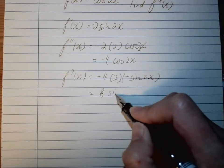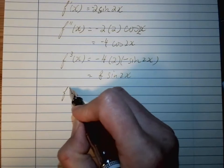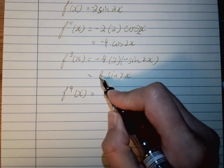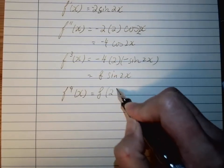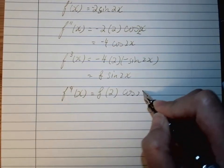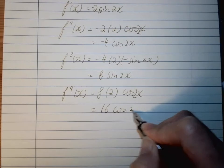Finally, the fourth time: 8 times 2 equals 16, and sine becomes cosine. So we got f^(4)(x) = 16cos(2x).